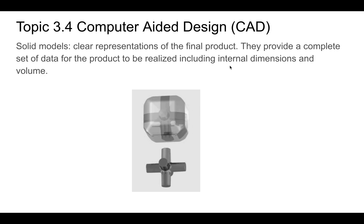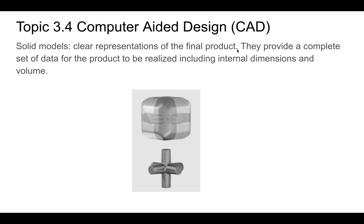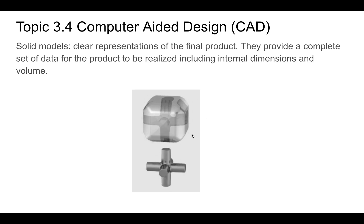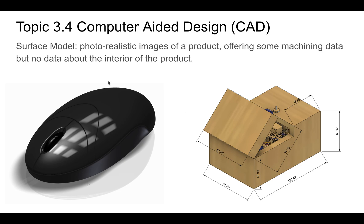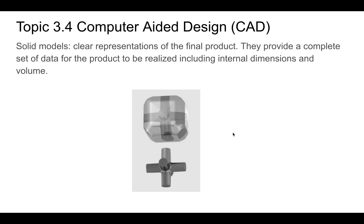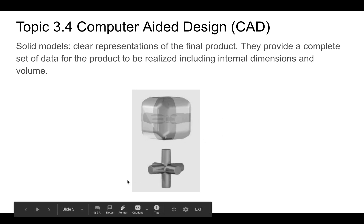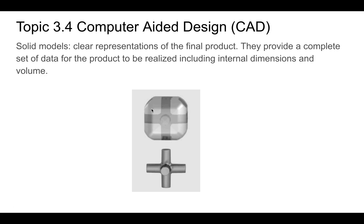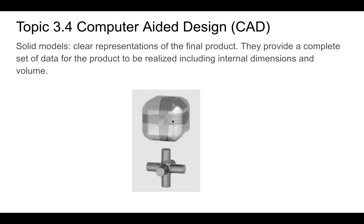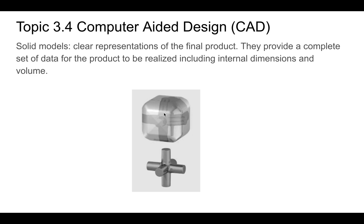A solid model gives you a clear representation of the final product and includes data for the product to be realized, including internal dimensions and volume — so you understand what's inside an object as well. A GIF here shows the interior of an object. The key idea is that a solid model includes the inside, compared to a surface model, which is really only focused on the outside.